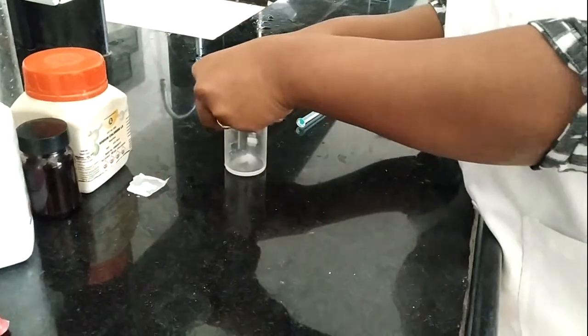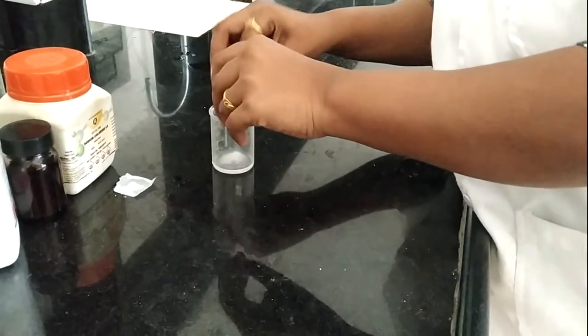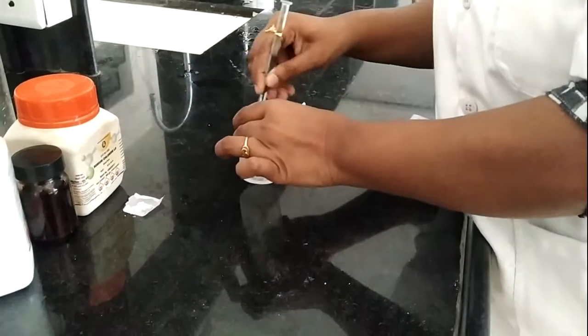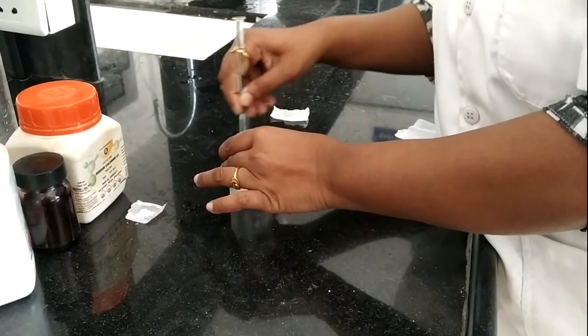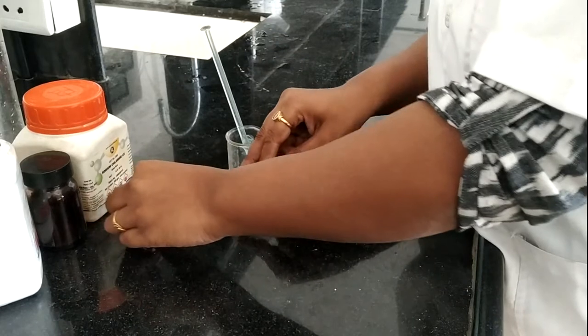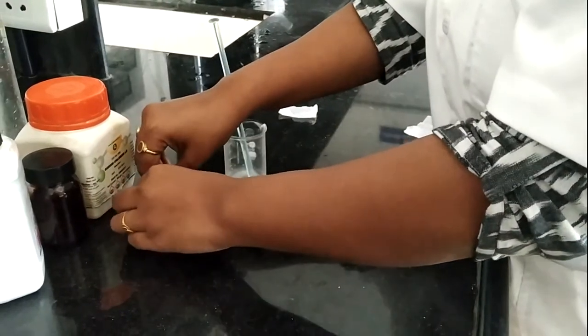First of all we are adding ephedrine hydrochloride, then this is chlorobutol. After that we are going to add this sodium chloride into it.